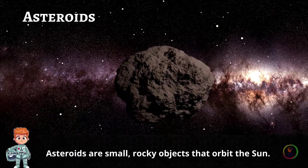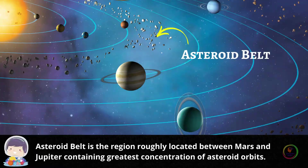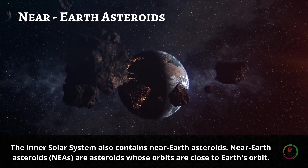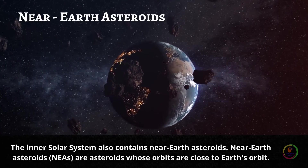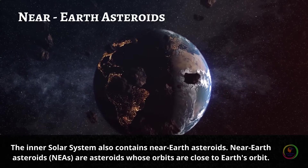Asteroids. Asteroids are small rocky objects that orbit the sun. Asteroid belt is the region roughly located between Mars and Jupiter, containing the greatest concentration of asteroid orbits. The inner solar system also contains near-Earth asteroids, which are asteroids whose orbits are close to Earth's orbit.